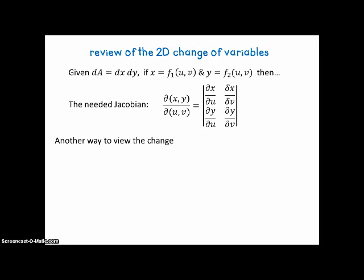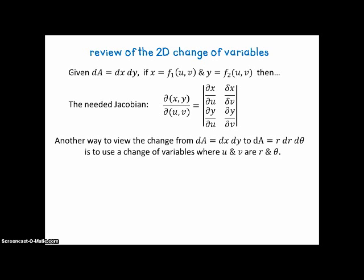So another way to view the change from dA equal dx dy to dA equal r dr dtheta is to use this change of variables idea where u and v are r and theta. And so we tend to forget that extra r, and so here's another way of looking at this so that you'll see why the r is necessary.